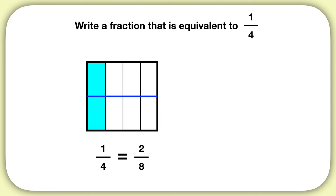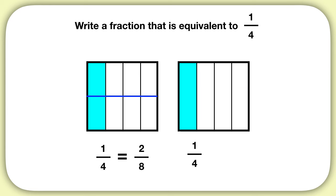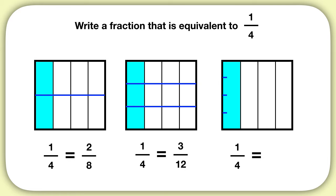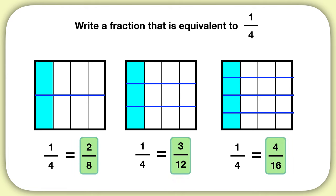But that's not the only equivalent fraction we could make. We could draw one-fourth again, and this time instead of splitting it into two sections, we could split it into three sections. When we do this, we create a new equivalent fraction: three over twelve. And we could keep going — we could take one-fourth and split it up into four pieces, giving us the equivalent fraction four-sixteenths. So these are three different examples of equivalent fractions. You could create more by breaking up one-fourth into smaller and smaller sections.